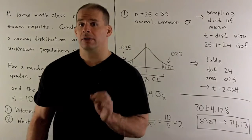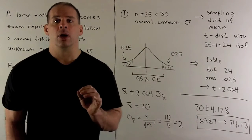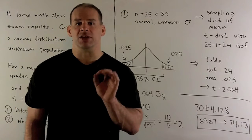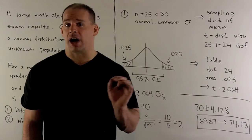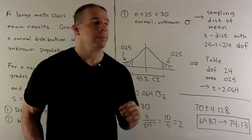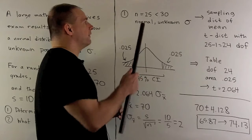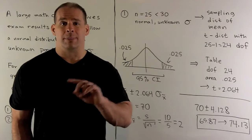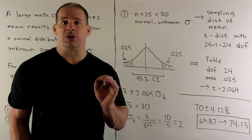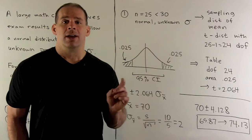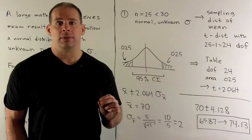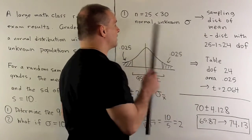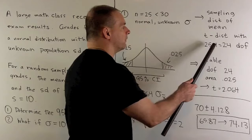For the first part, we need to figure out what type of distribution we're going to use for the sampling distribution of the mean — that's the distribution we use to construct our confidence interval. Our sample size is 25, which is less than 30. We have a normal distribution for the population, but we don't know the standard deviation, so we're going to use a t-distribution. The number of degrees of freedom is the sample size minus one, giving us 24 degrees of freedom.